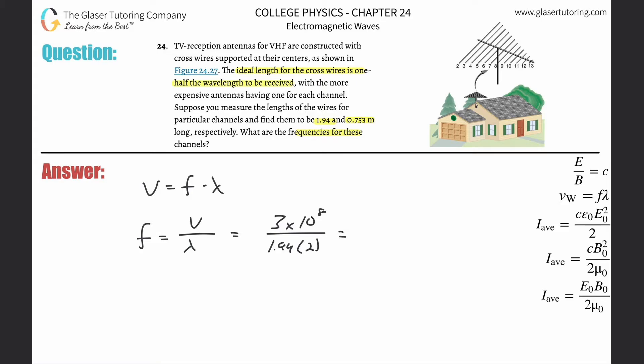So we're going to do 3 times 10 to the 8 divided by 1.94 times 2. The frequency here is going to be about 7.73 times 10 to the 7 hertz.